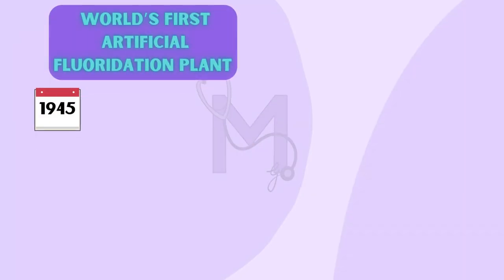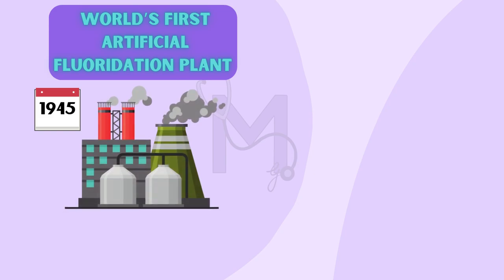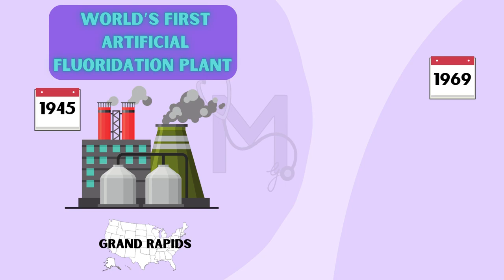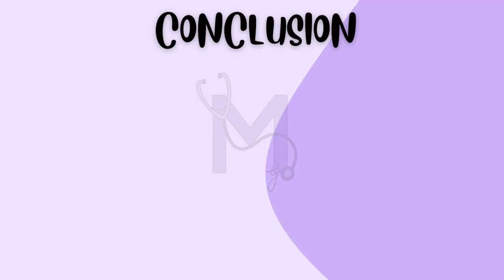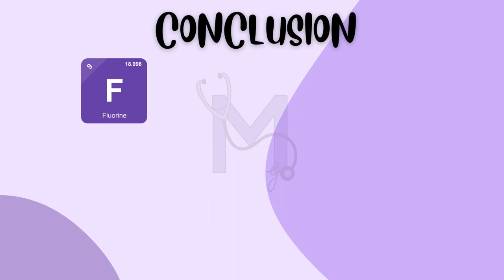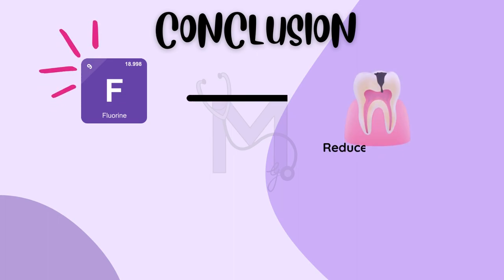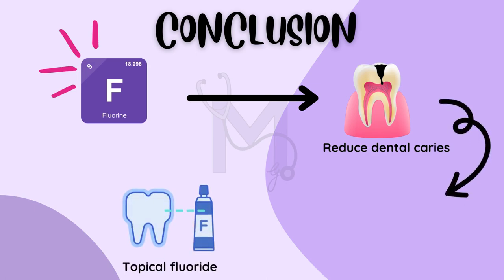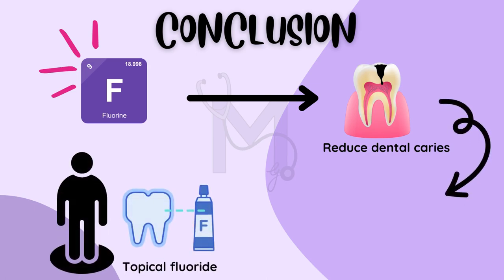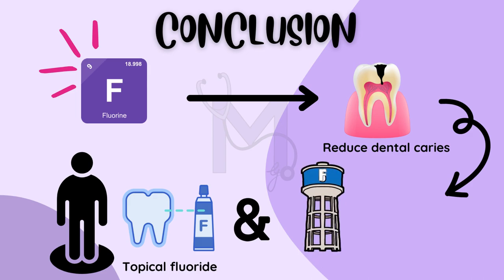Later, in 1945, the world's first artificial fluoridation plant was started at Grand Rapids in the USA. In 1969, WHO advocated that 1 ppm of fluoride in community water supplies was a practical and effective public health measure. In conclusion, fluoride was thus identified as the essential element for reducing dental caries, and this led to the introduction of various methods of topical application of fluorides for individuals and water fluoridation projects for communities.